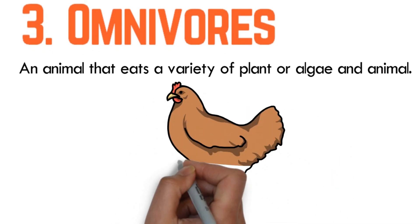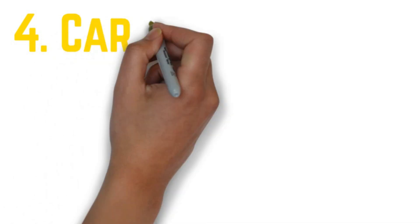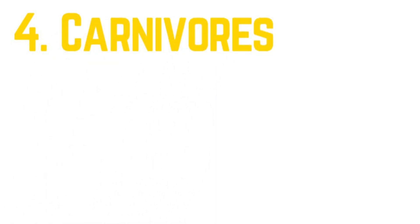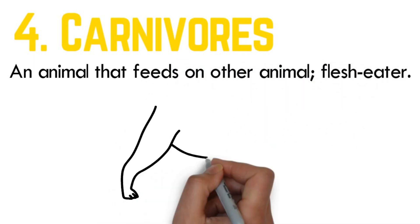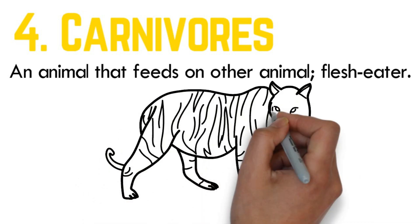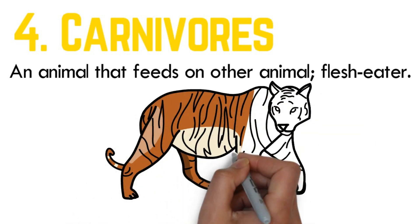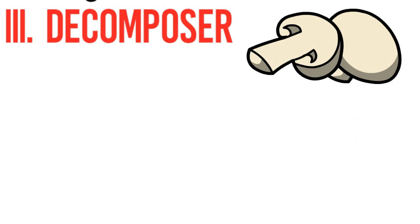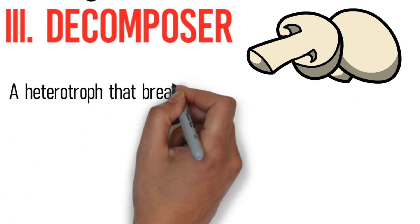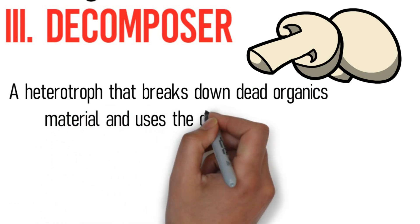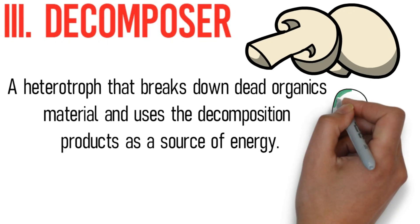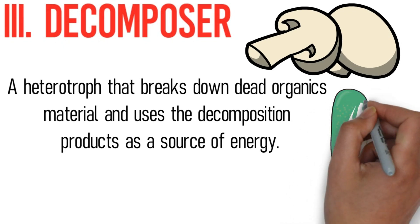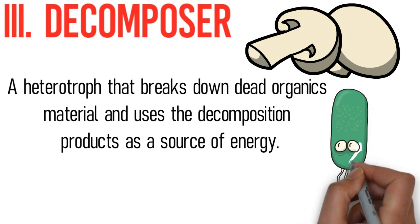The last type of heterotroph is carnivore. A carnivore is an animal that feeds on other animals — a flesh eater — and is usually a secondary or tertiary consumer located at the third trophic level. The third type of biotic component is decomposer. A decomposer can be defined as a heterotroph that breaks down dead organic materials and uses the decomposition products as a source of energy. We can also call it a saprotroph. Examples of decomposers are bacteria and fungi.